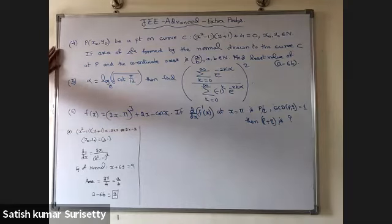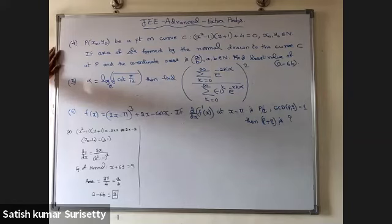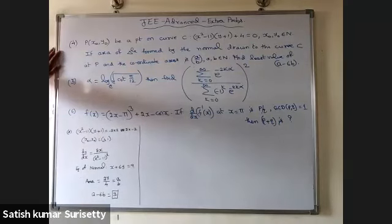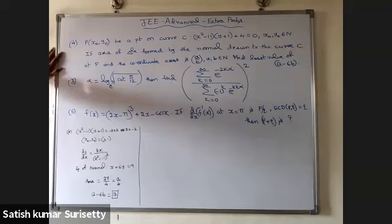A student asks whether the answer would differ if natural numbers weren't specified. The response is that the problem is specifically designed so that natural number solutions exist; without that constraint the problem would not be solvable to a unique answer.